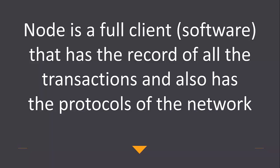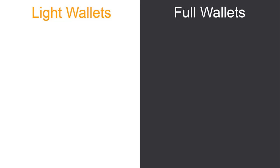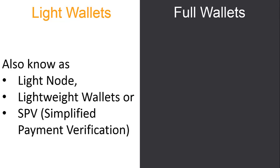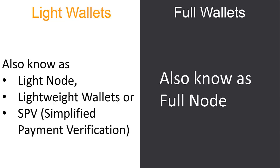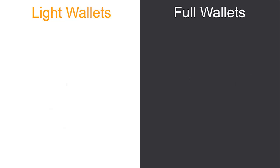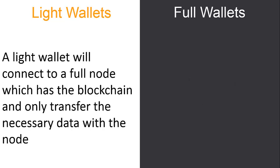Light wallets and full wallets are referred to by different names. Light wallets are also called light nodes, lightweight wallets, or SPV, which stands for Simplified Payment Verification. Full wallets are also known as full nodes.